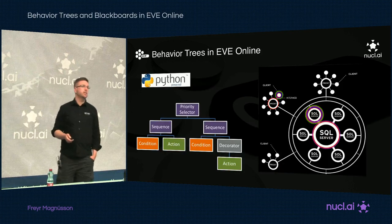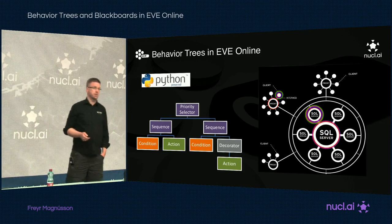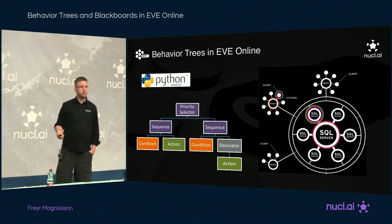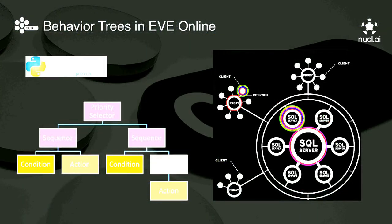Our behavior trees are entirely built in Python and they run on the solar nodes in our server cluster — the nodes that run the physics simulation for each solar system. They tick once per second, which is the same update rate as the physics simulation itself, and we don't really need anything more than that. We built them fairly granularly from a basic assortment of nodes: sequences, selectors, conditions, actions, and decorators — which is pretty standard. But I want to talk more about the non-standard things we did.